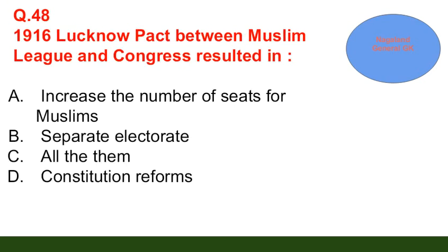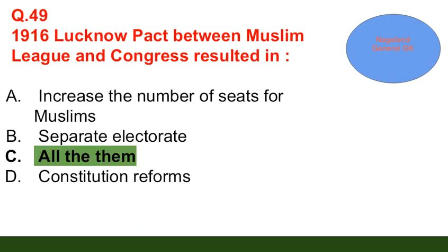This is the last question for today's video Part 2. Question number 48: The 1916 Lucknow Pact between the Muslim League and Congress resulted in — option A: increase in the number of seats for Muslims; option B: separate electorate; option C: all of them; option D: constitutional reforms. The correct answer is all of them.